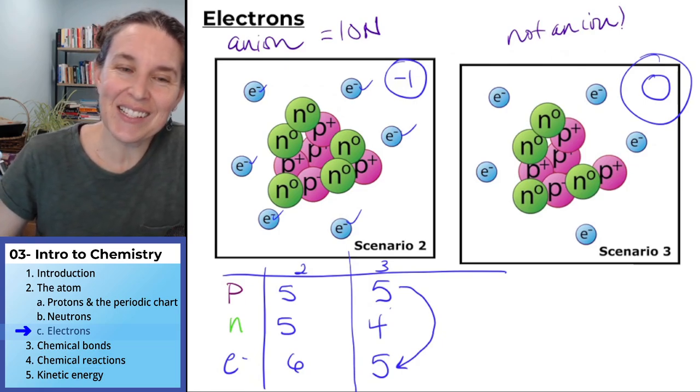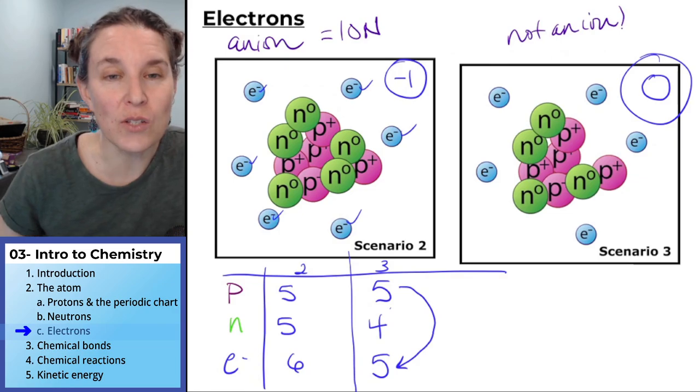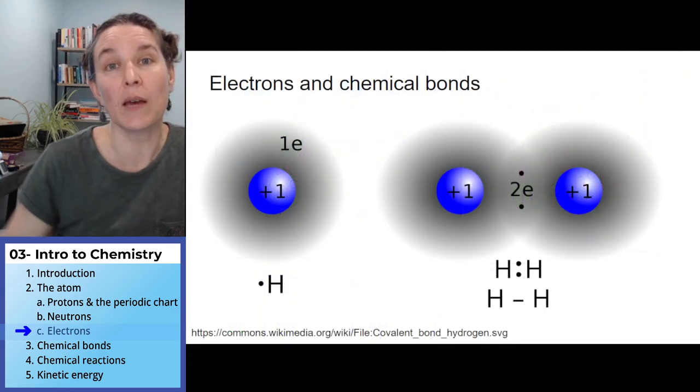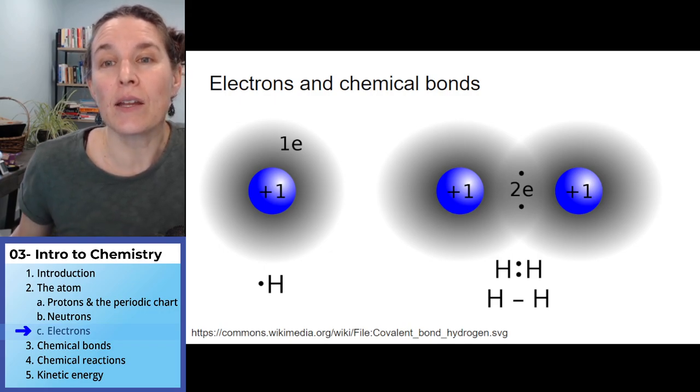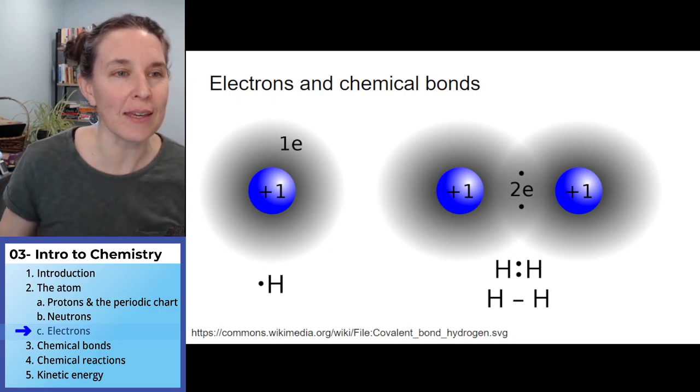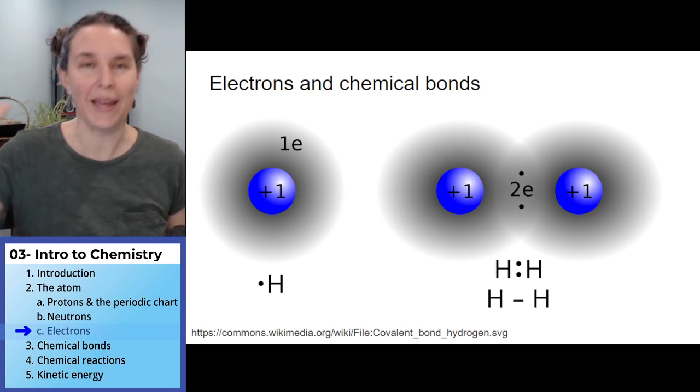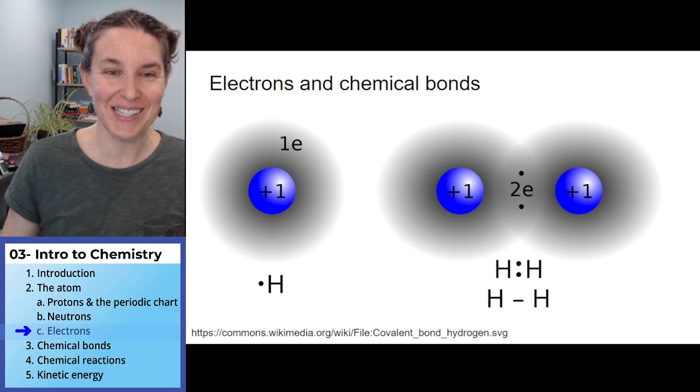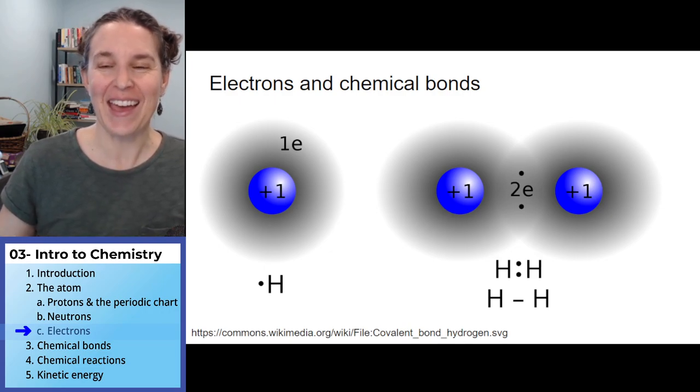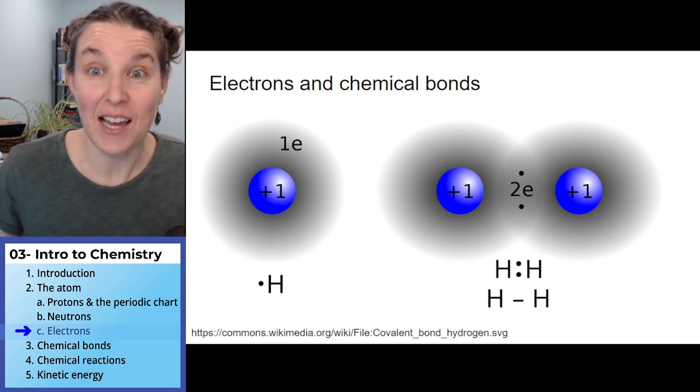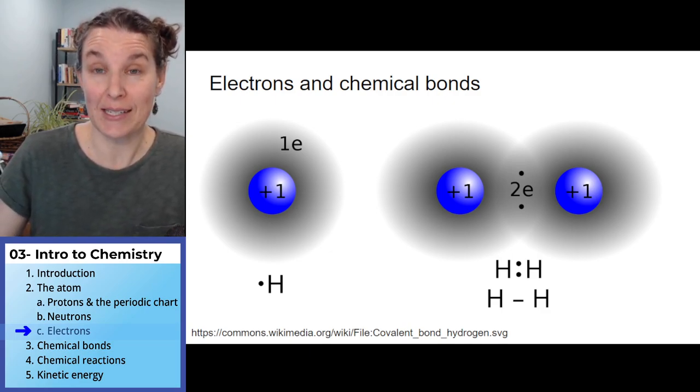And electrons are also really important because they play a role in forming chemical bonds. And I think that I don't know where I'm supposed to talk about chemical bonds. Oh, I get to talk about that in its own section. So I get to stop right now and talk about chemical bonds next because electrons are related to chemical bonding.